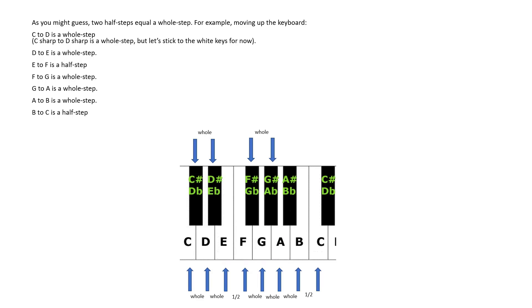A to B is a whole step. B to C is a half step. Again, there's no black key between them.